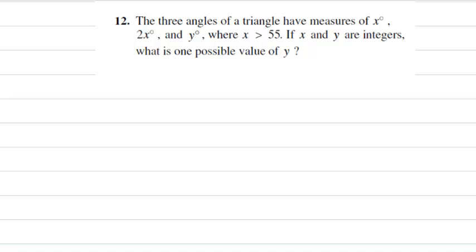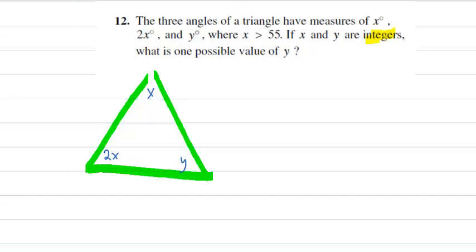Here's a problem from College Board's 2004 practice test. The three angles of a triangle have measures of X, 2X, and Y. And, of course, this is not to scale. X has to be greater than 55. And it's an integer. Like I always say, pay extra attention to when you see the word integer. It turns a really tough problem into a manageable problem. What's one possible value of Y?